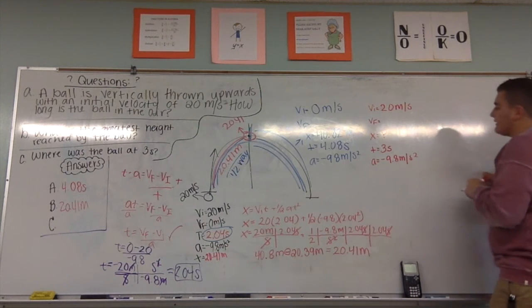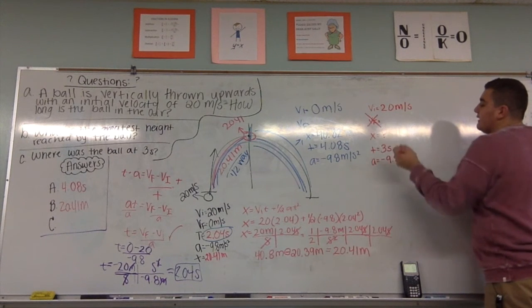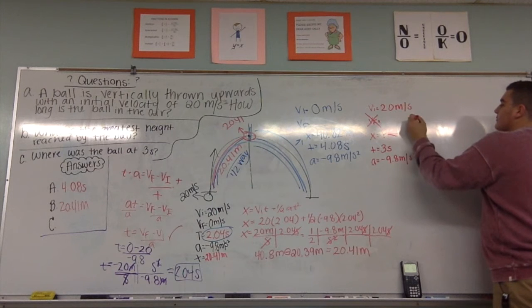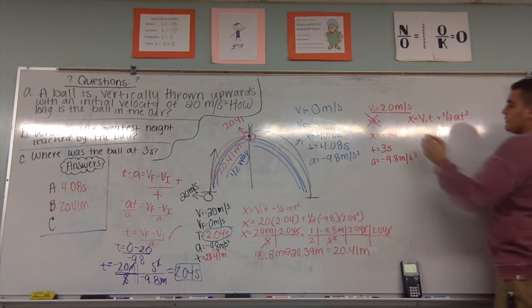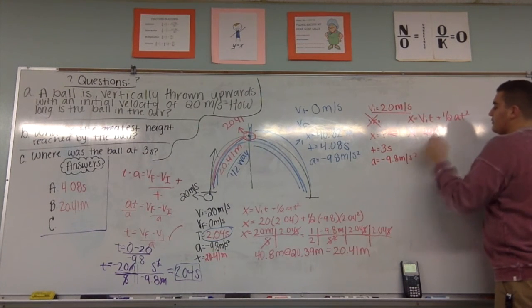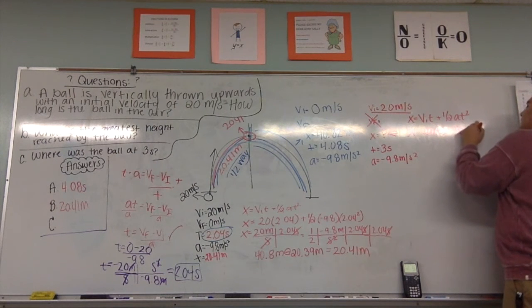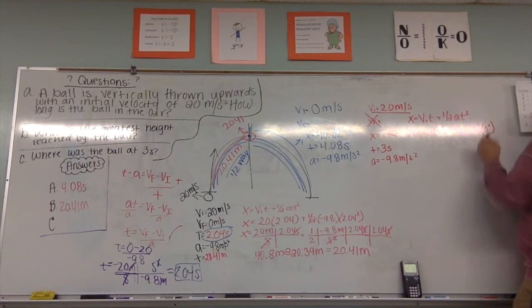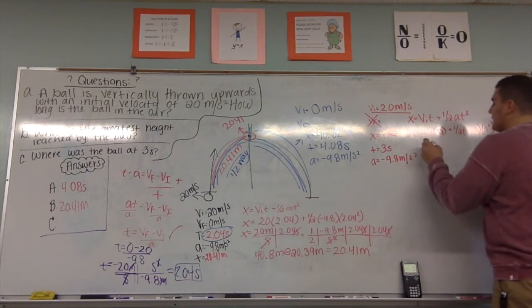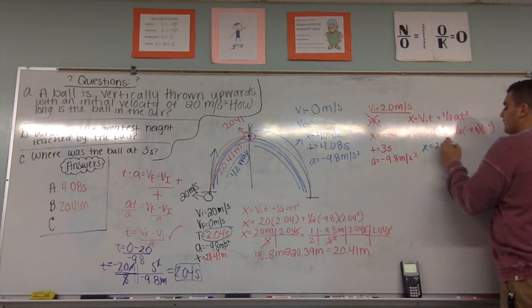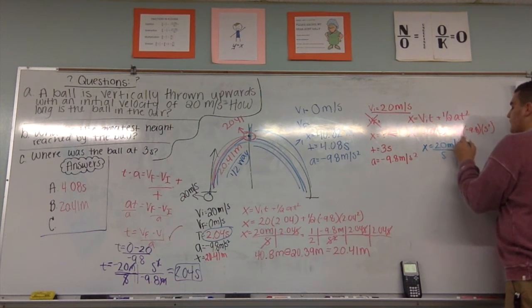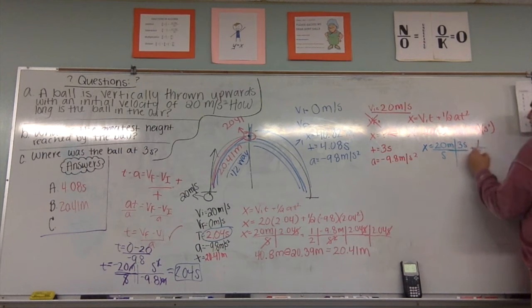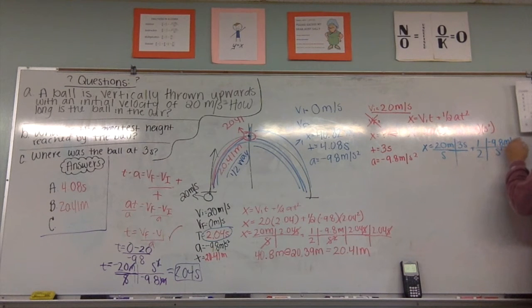So first we need to find our final velocity. Actually we don't need final velocity to find displacement. So we're going to use our displacement formula. x equals the initial velocity times time plus half acceleration times time squared. Using this equation, we can plug it in. x equals 20 times time, which is 3, plus one half the acceleration, negative 9.8 times time, times time squared. So we're going to plug this into our dimensional unit analysis x equals 20 meters over seconds times three seconds plus half negative 9.8 meters per second squared and 3 seconds squared.